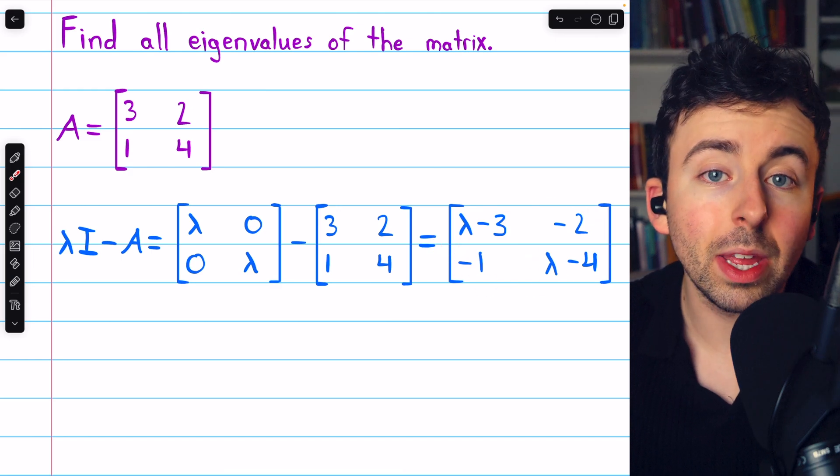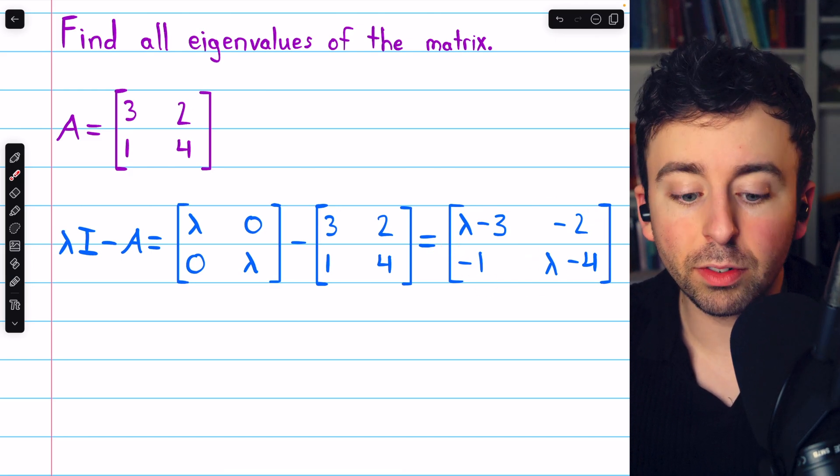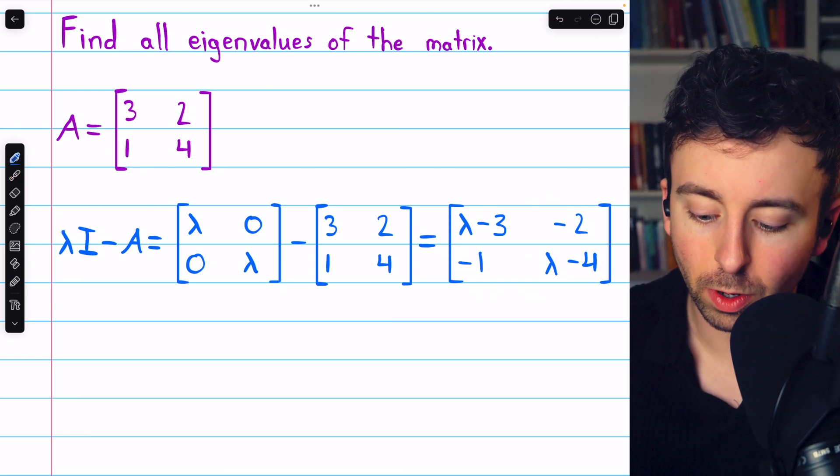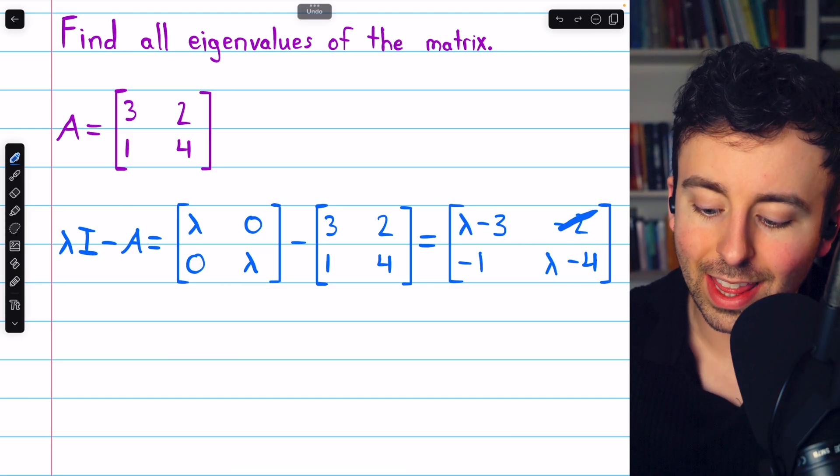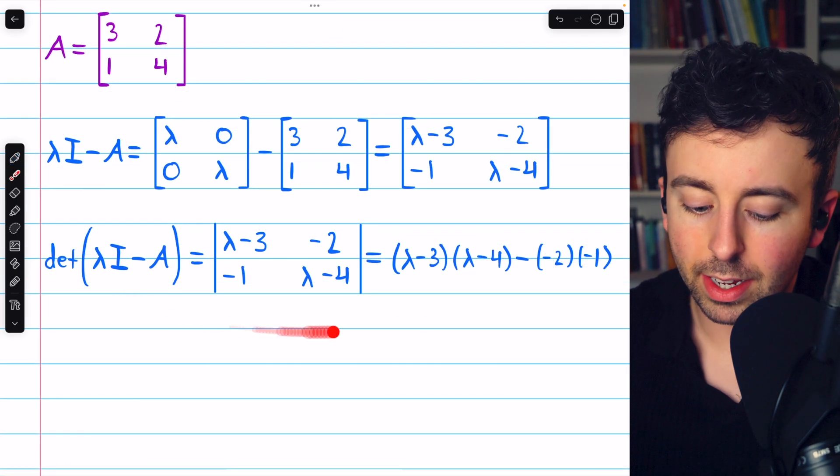Now we have to calculate its determinant, which is straightforward because it's a two-by-two matrix. We'll take this diagonal product and subtract that diagonal product. And here that is.